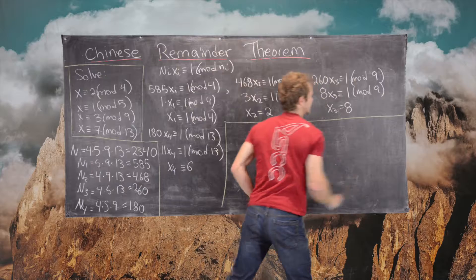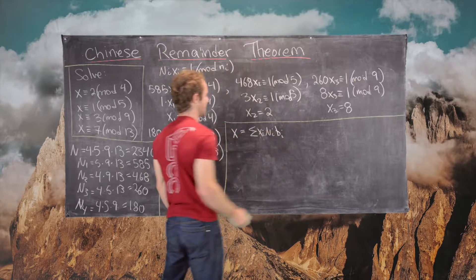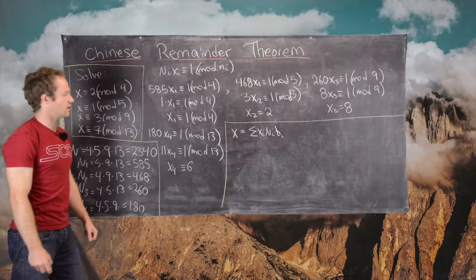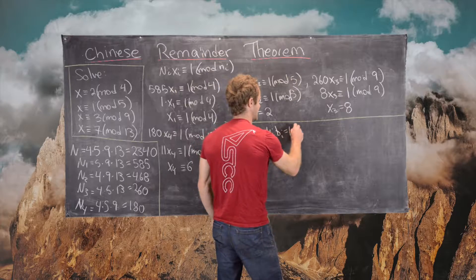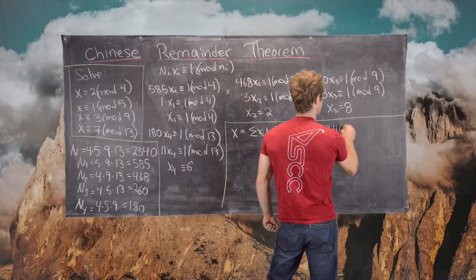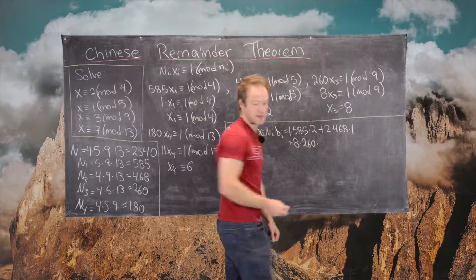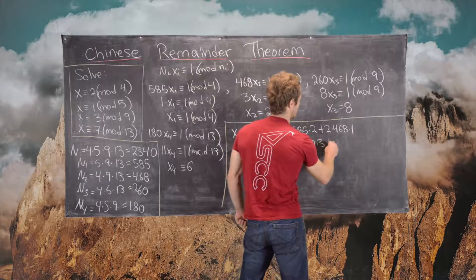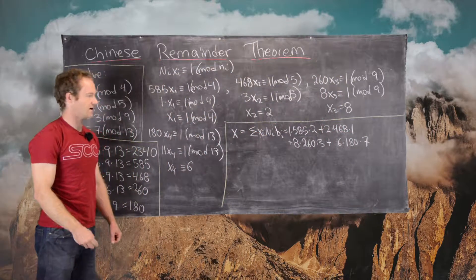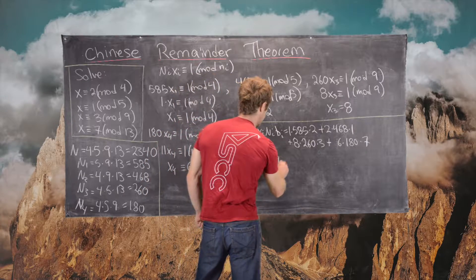Now we can move on to our next step, which involves forming the number X, which is equal to the sum of the XI times the NI times the BI, where the BI are given by these numbers: 2, 1, 3, and 7. That's going to be 1 times 585 times 2, plus 2 times 468 times 1, plus 8 times 260 times 3, plus 6 times 180 times 7. We've formed our number X, and this tells us that X is equal to 15,906.